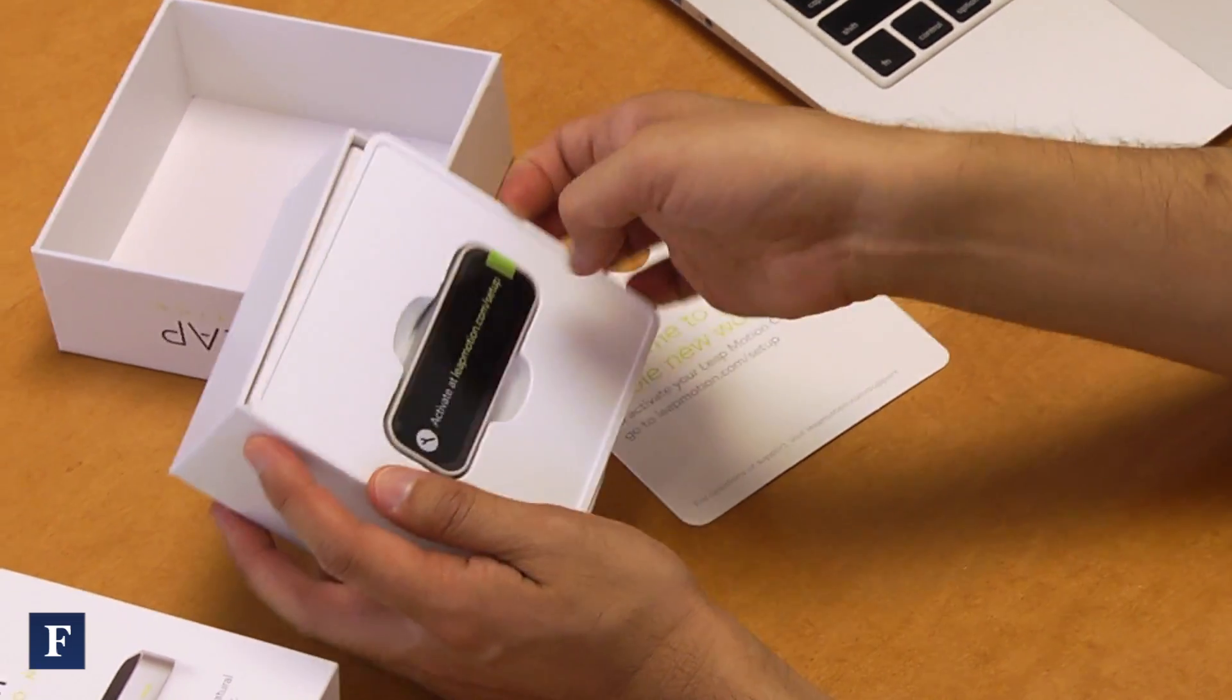So here we have the Leap Motion controller, which, as you can see, is really small, surprisingly small. It looks like a big stick of gum, basically.